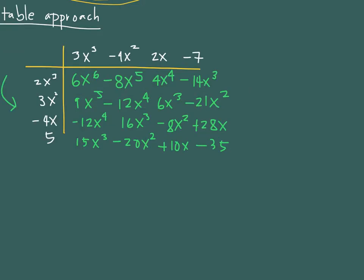To get the final answer, you will be adding the like terms diagonally. So first, we only have 6x to the 6th, so we write that as the first term: 6x to the 6th. And then the next one is the sum of these two. That's a 9 and a negative 8. Take note, they have the same exponents, 5. So 9 and minus 8 is 1, so that's positive x to the 5th.